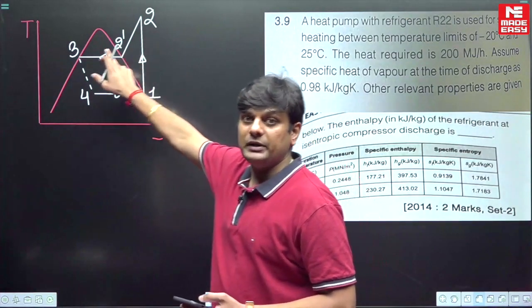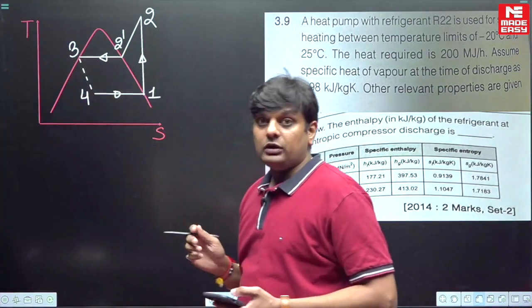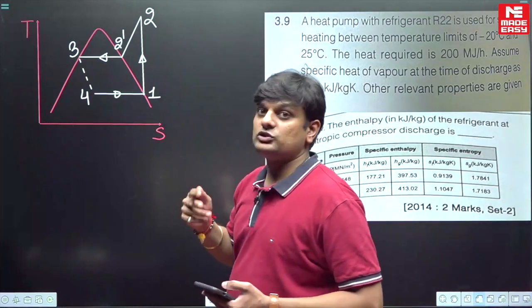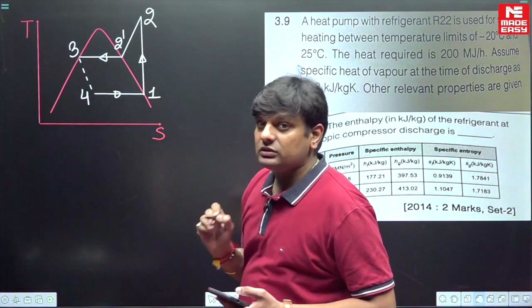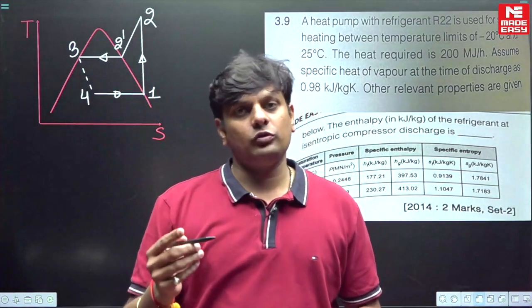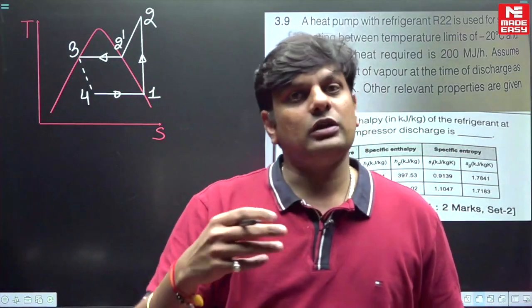Complete evaporation and complete condensation. But if some information is given, the entry to the compressor is in superheated state, entry to the compressor is in wet region, exit of condenser is in subcool region, then you have to draw the TS diagram according to that. Then find out the values of enthalpies.